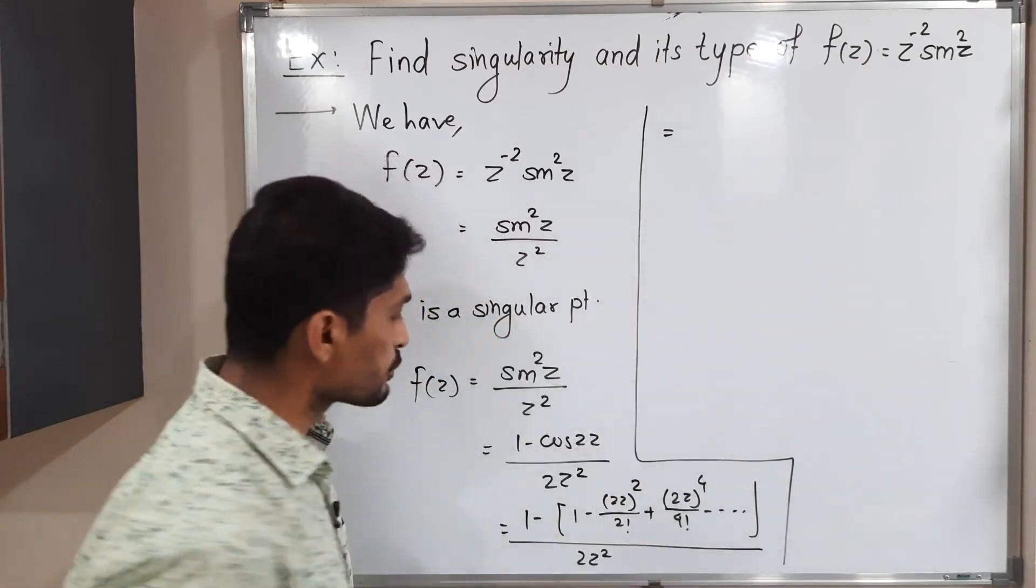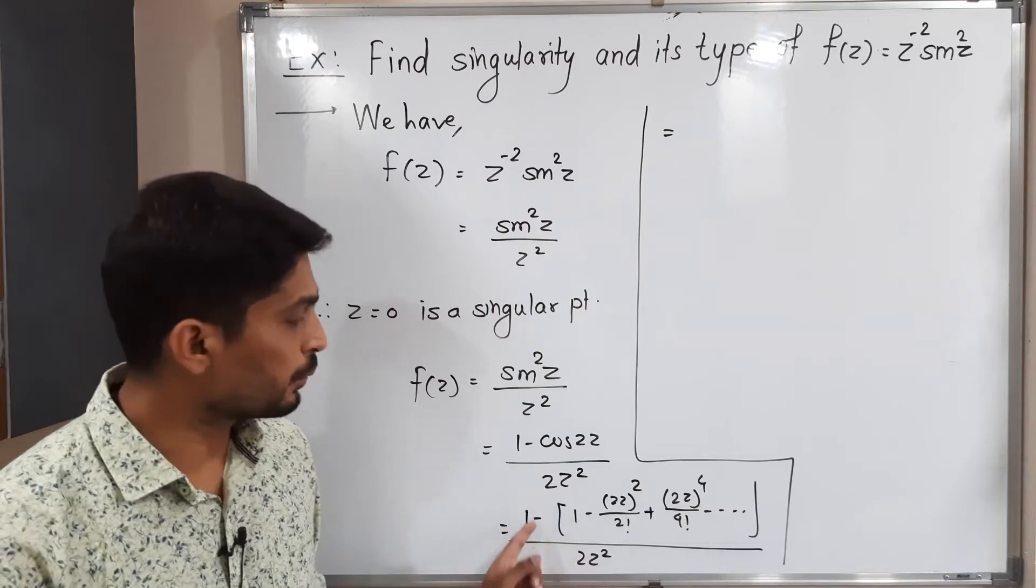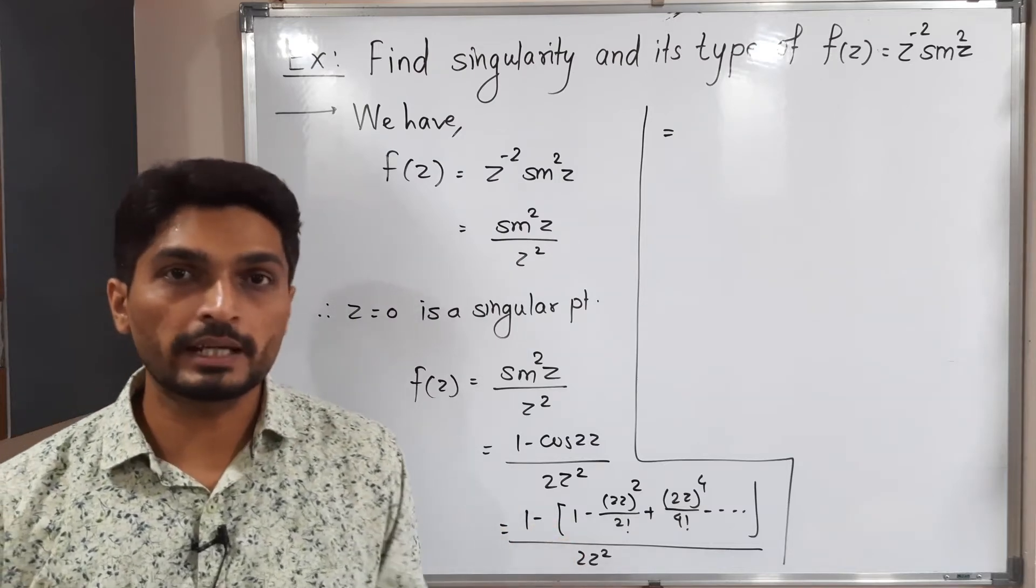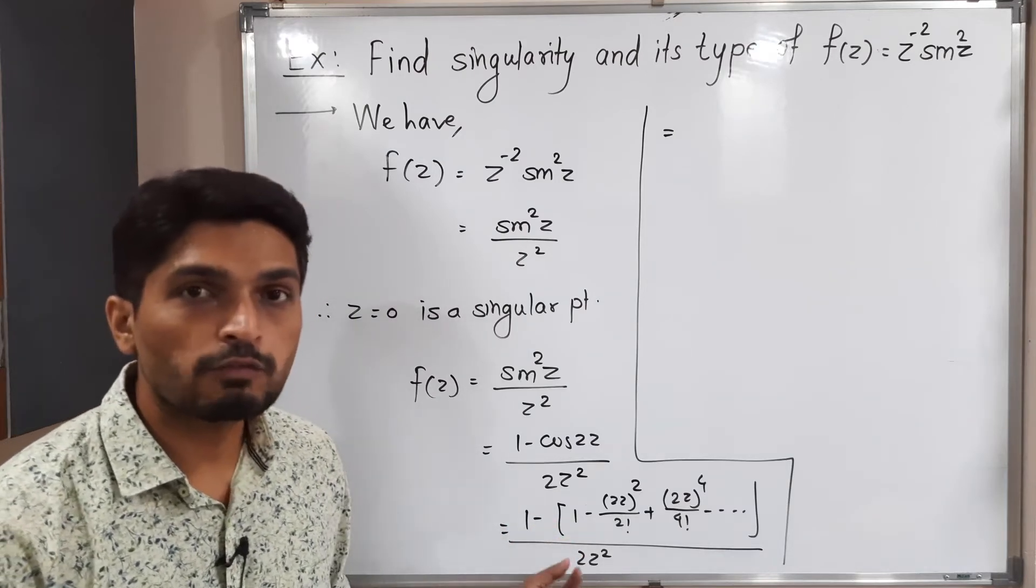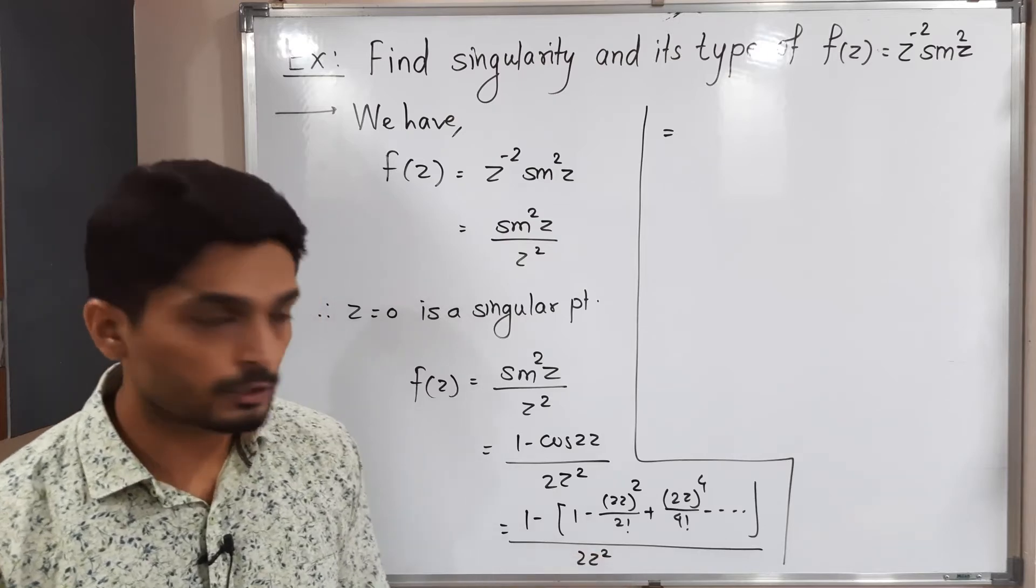So this is equal to, when you solve the bracket, what will happen? This 1 and +1 and -1 will get cancelled with each other and sign of all terms will get changed. Let us do.